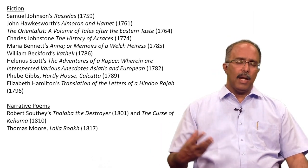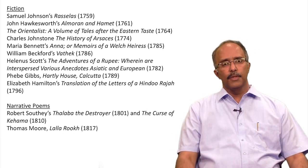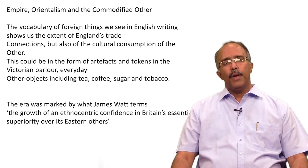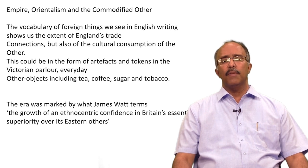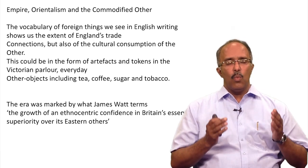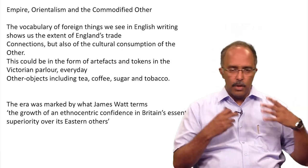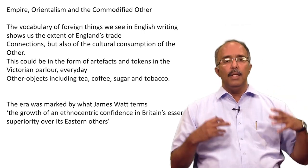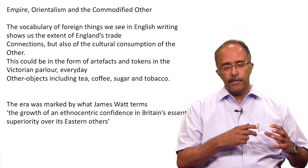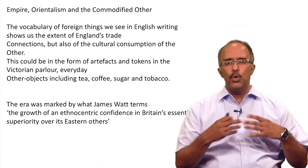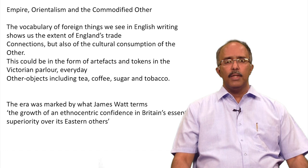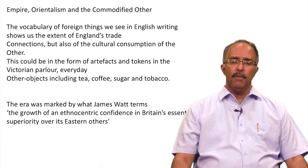We will take it in stages as to how the Empire occurs in the social and literary imagination of England. Our first stop is Empire, Orientalism, and the Commodified Other. The vocabulary of foreign things we see in English writing shows us the extent of England's trade connections but also the cultural consumption of the other. I am thinking of this in two ways: one, the actual arrival of commodities in England — tea, coffee, tobacco, cloth and muslin — but also that these products feed the way the literature about the East is produced. So it is a two-way interaction, which we put under the category the cultural consumption of the other.